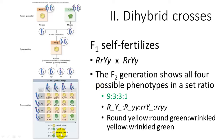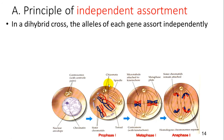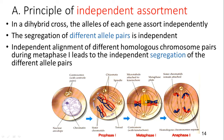When you allow the F1 to self-fertilize, the different genotypes and phenotypes show a nine to three to three to one ratio: round yellow, round green, wrinkled yellow, and wrinkled green. This is a good ratio to remember — nine to three to three to one. Mendel's observation led to his second principle: the principle of independent assortment. In a dihybrid cross, the alleles of each gene are not connected to the other gene, so they assort independently — this has to do with non-homologous chromosomes.